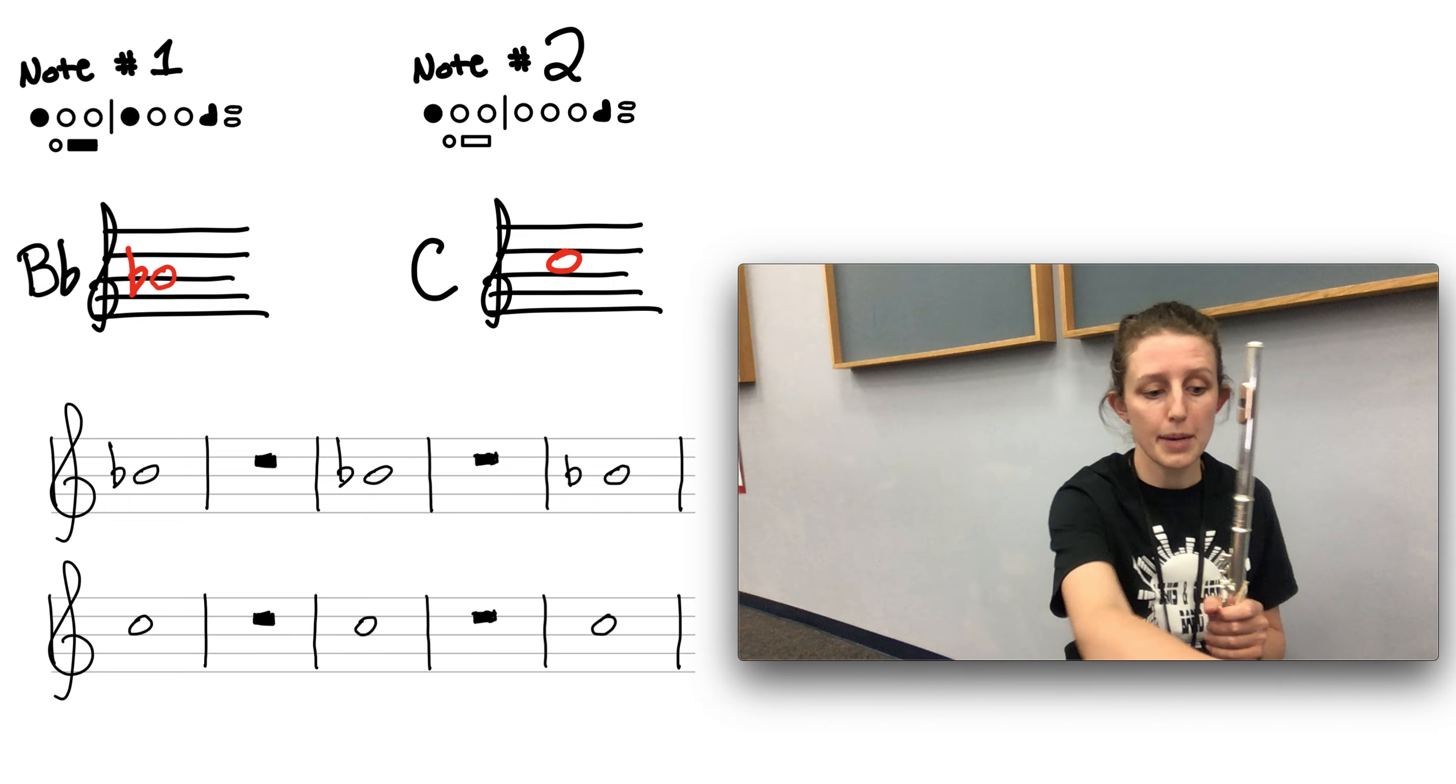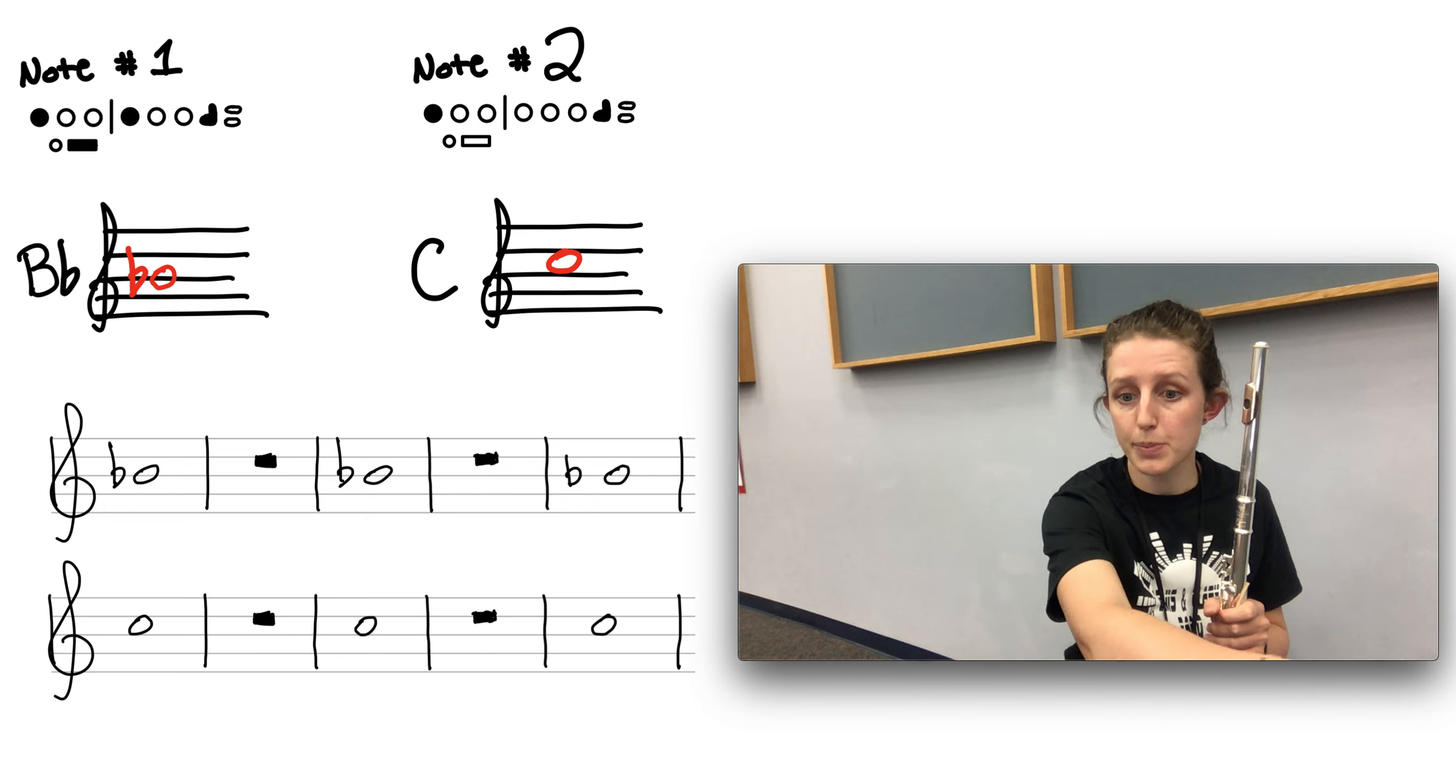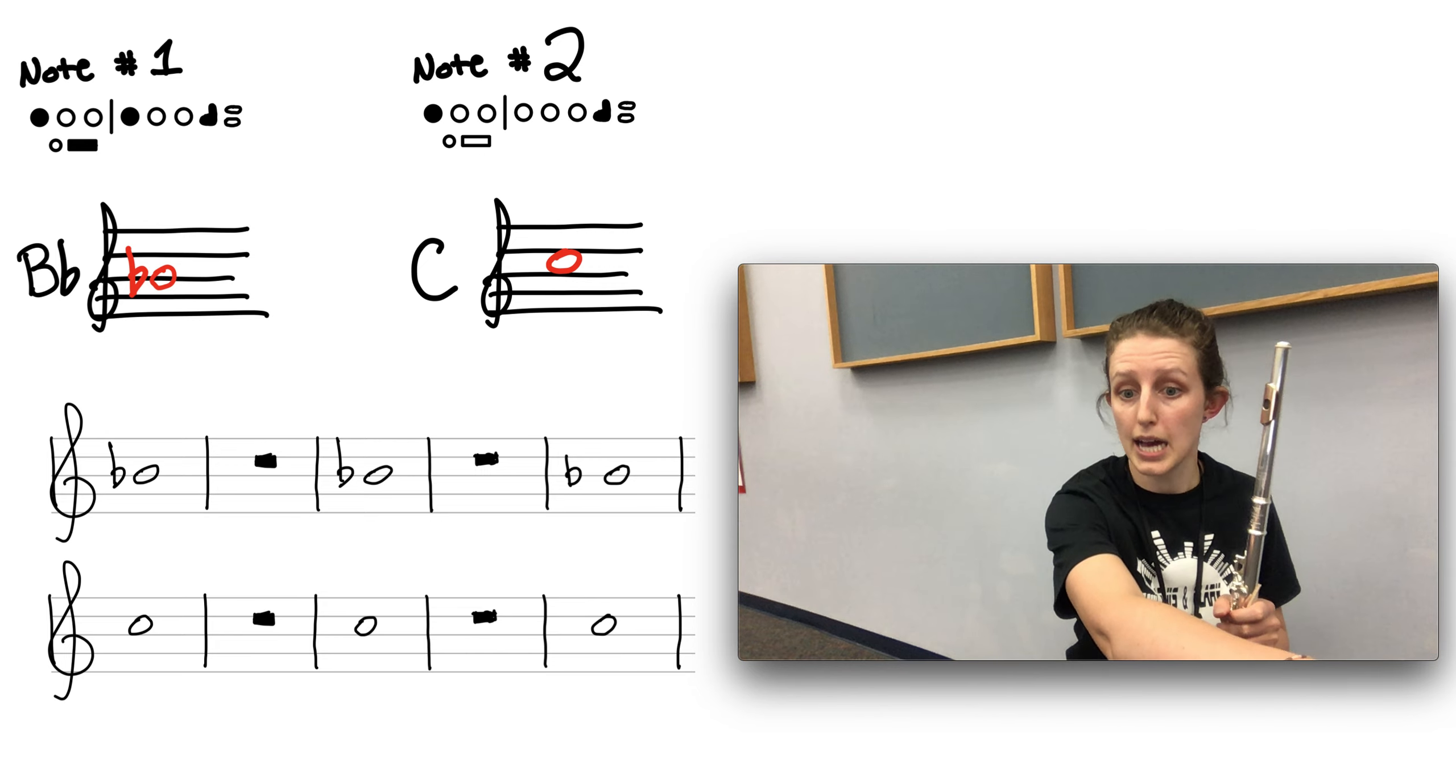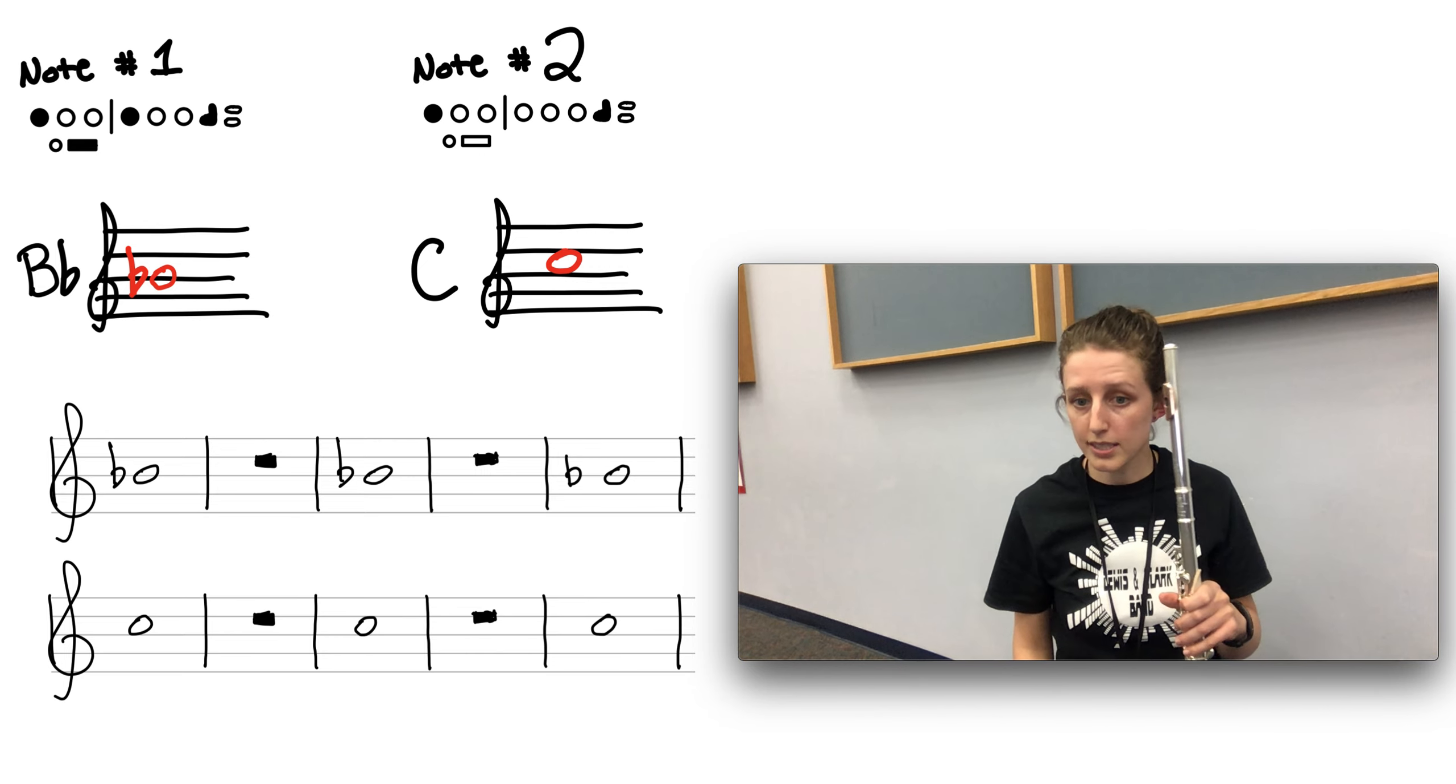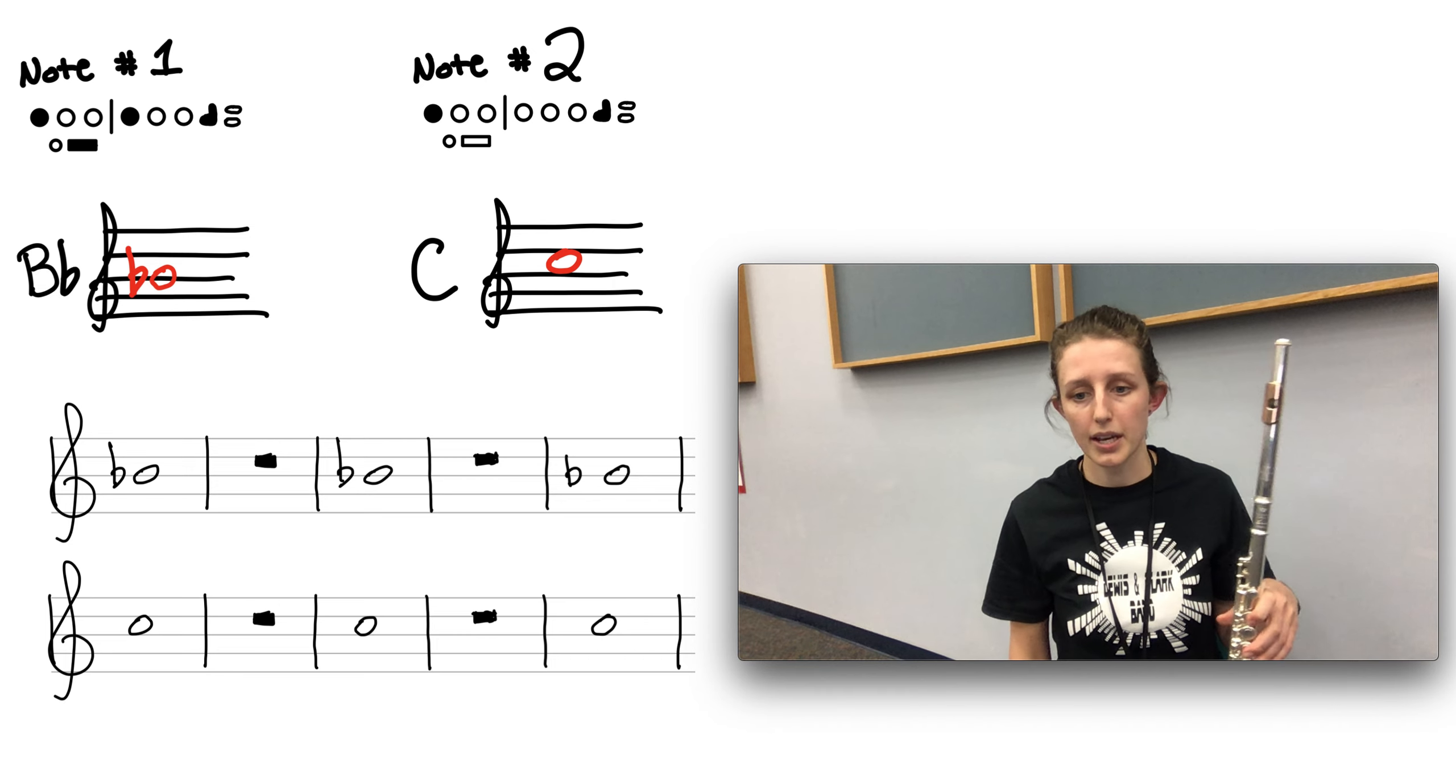So I'm going to set my metronome to 60 beats per minute or 60 BPM. That means there's 60 beats that happen in a minute.